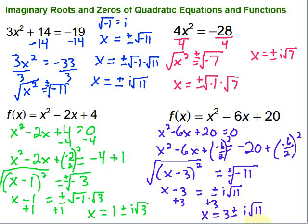So, imaginary roots and zeros of quadratic equations and functions: if the x squared term is the only variable, you can just get it by itself using inverse operations and a square root. Then, if you end up with a negative under the square root, pull out the square root of negative 1 — that's i, the imaginary unit — and simplify. Don't forget the plus or minus when you take the square root of both sides. Sometimes you'll need to complete the square, but the same rule applies: when you get a negative under the square root, pull out the i and simplify. Hope this video was helpful — keep working hard on your math, you can do it.